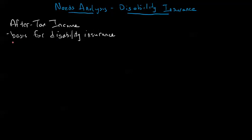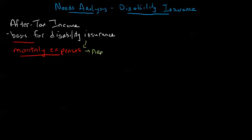We look at your after-tax income as your ability to acquire disability insurance, and then we look at what your monthly expenses are. For people who are spending more than they're making, this gets a little bit complicated — but if you have somebody who's roughly in balance, your monthly expenses provide your need. And that's really relatively straightforward.